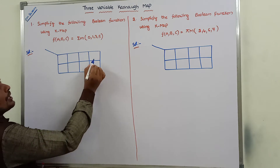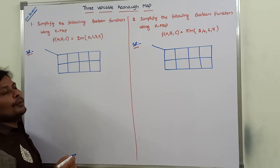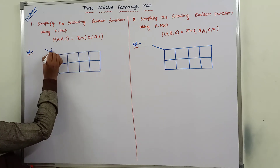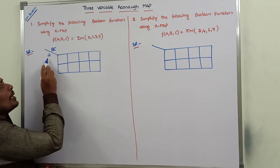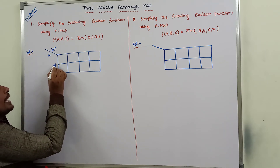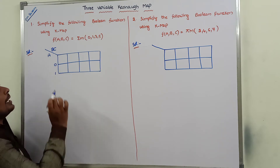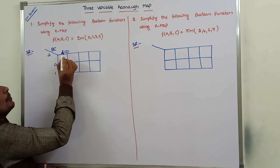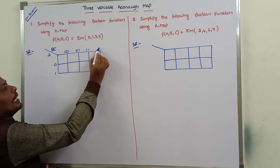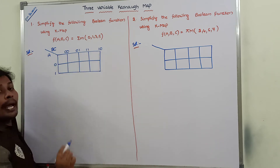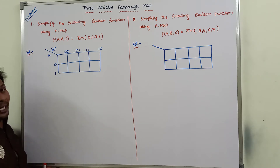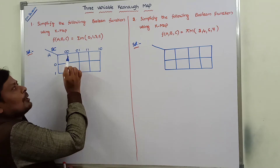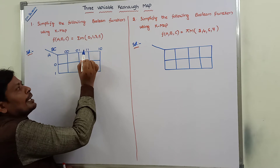This is the general representation of the 3-variable Karnaugh map. In the row side, we are using only one variable, A. In the column side, we are using 2 variables, B and C. One variable can take either 0 or 1. Two variables have 4 possibilities: 00, 01, 11, 10. We do not write 00, 01, 10, 11 — because in the Karnaugh map, we have to follow the Grey code. In Grey code, the sequence is 00, 01, 11, 10.